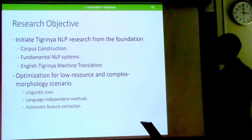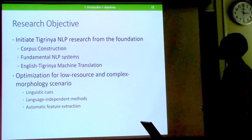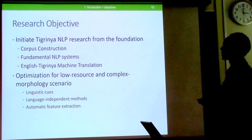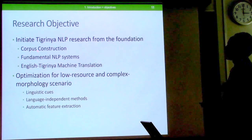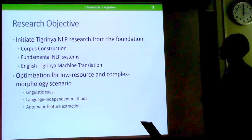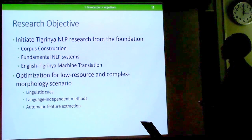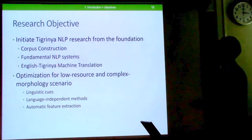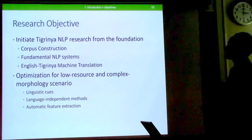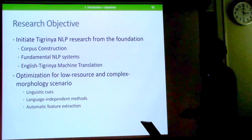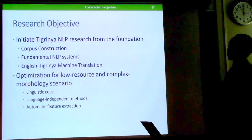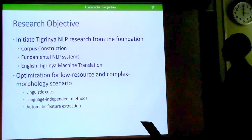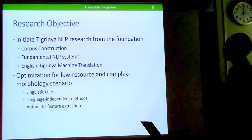Our research objectives are to initiate Tigrinya NLP research from the foundation by developing a corpus — a large text especially created for linguistic studies. From this corpus we plan to research fundamental NLP systems, and use them to enhance the performance of an English-to-Tigrinya machine translation system. Because Tigrinya is a low-resource language with complex morphology, we consider linguistic cues, language-independent methods, and automatic feature extraction.